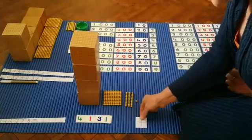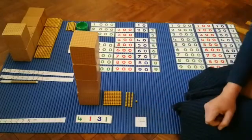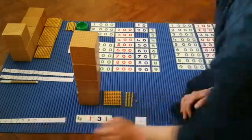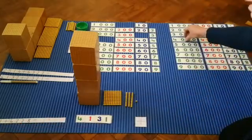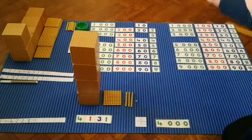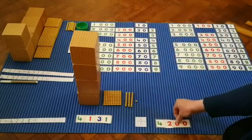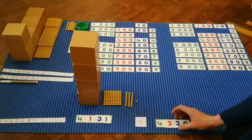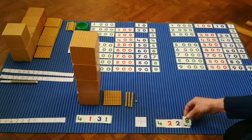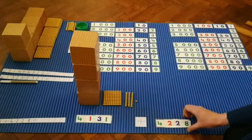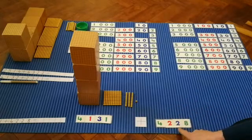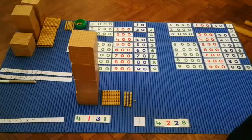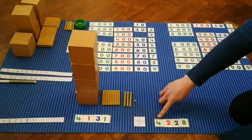Remember we're adding them together. Now I'm going to make my second adding which is four thousand two hundred and twenty-eight. So I need four thousands, two hundreds, two tens, and eight units. Four thousand two hundred and twenty-eight. That's my number. Now I'm going to make our second adding. I need four thousands.